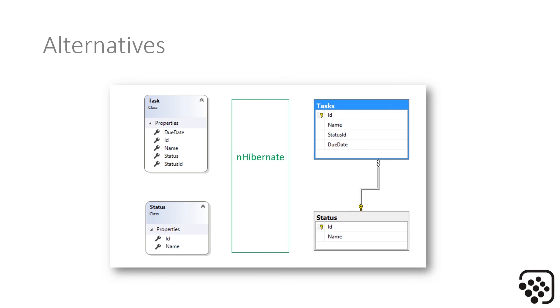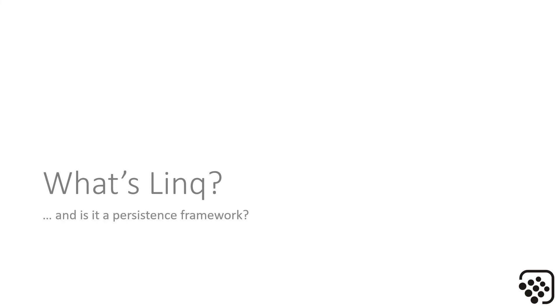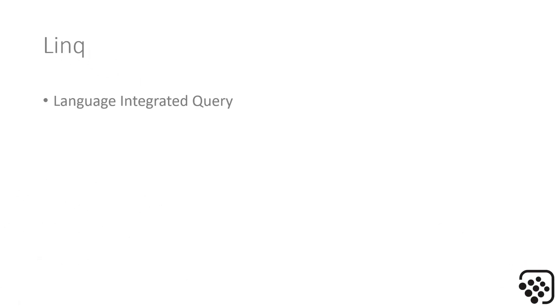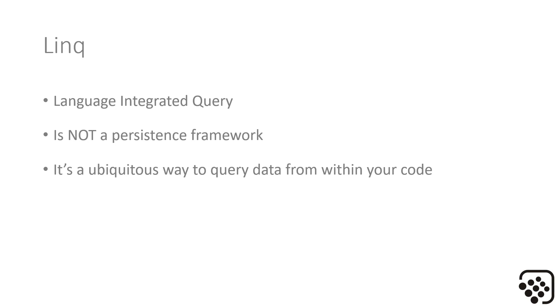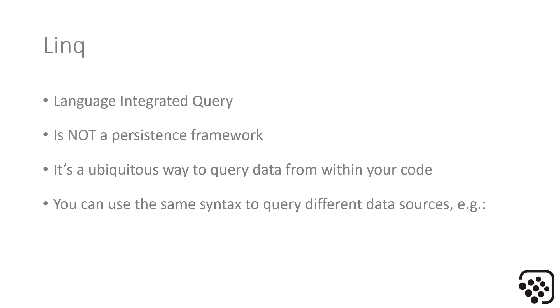The other alternative is NHibernate. I've never personally used it, but it's a very popular and widely used framework — just Google 'NHibernate' to learn more. Finally, just before we start coding: what is LINQ and is it a persistence framework? No, it's not. LINQ stands for Language Integrated Query. It's a ubiquitous way to query data from within your code. Unlike SQL, which is really linked to relational databases, LINQ is a layer of abstraction away from that — and the power of it is that you can use it with any type of data source, such as relational databases or XML, so long as there is a LINQ provider for that data repository. You can use the same syntax across those different repositories.